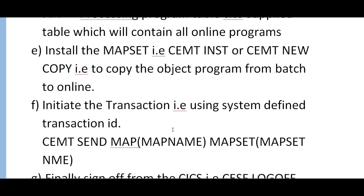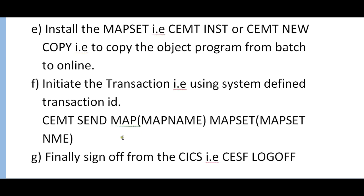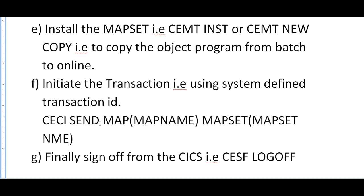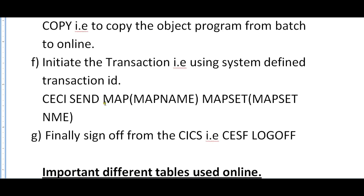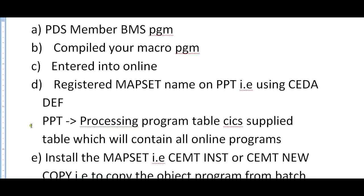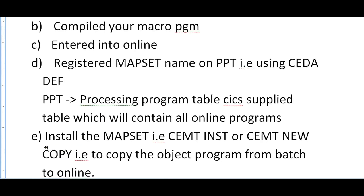If the mapset is not installed, you cannot view it — that is a very important point. Finally, you initiate the transaction to send the map to the screen. You use CECI SEND MAP with the map name and the mapset name. That is the manual way of displaying your map. If you want to sign off or log off from the CICS screen, just type CESF and log off.